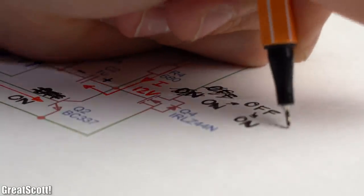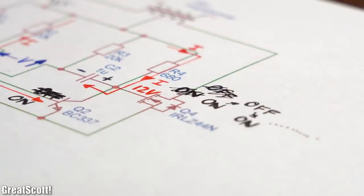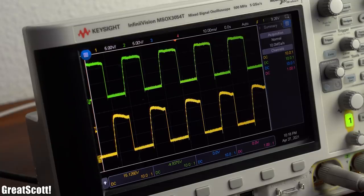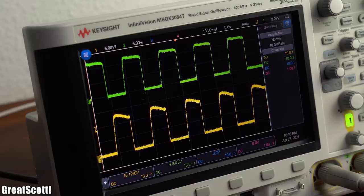This process basically repeats over and over again, creating a more or less nice looking square wave at the gate of the two MOSFETs.